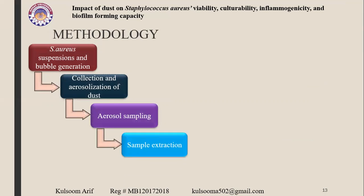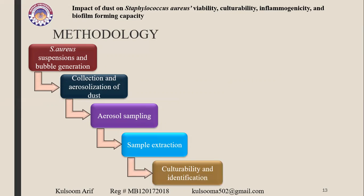In the sample extraction step, bacteria and dust on the filters from GSP were extracted in 5 ml of extraction fluid containing 0.85% NaCl and 0.05% Tween 80 solution by shaking at 500 rpm for 10 minutes. Sample extraction was done either immediately, after 30 minutes, or 3 hours post-sampling. The time from end of sampling to extraction is referred to as resting time, and the effect of resting time — 30 minutes versus 180 minutes — was studied.